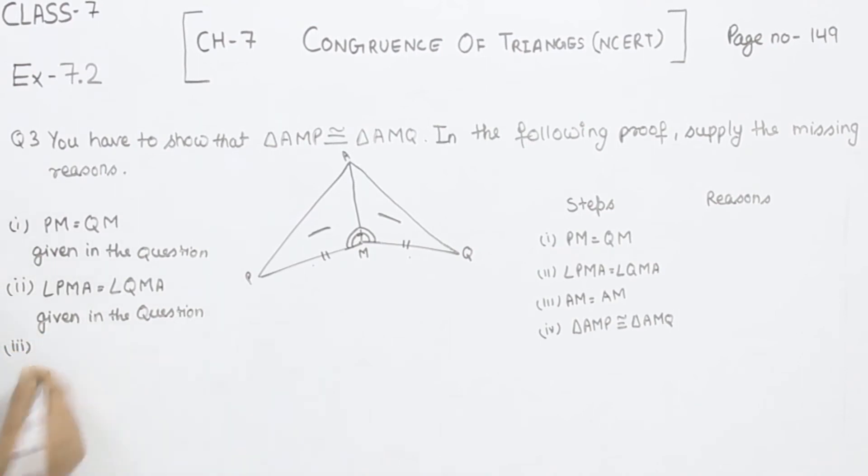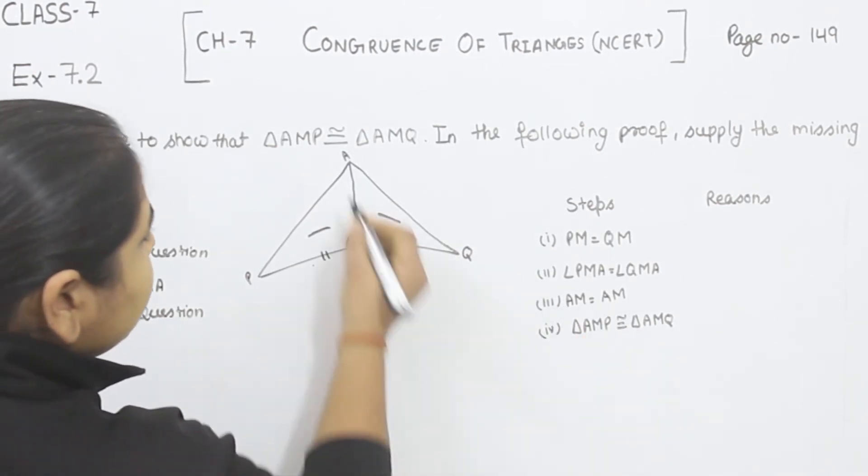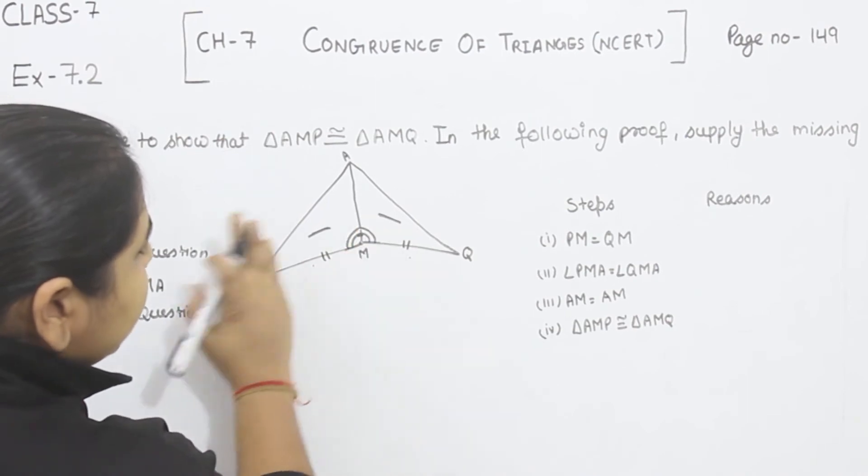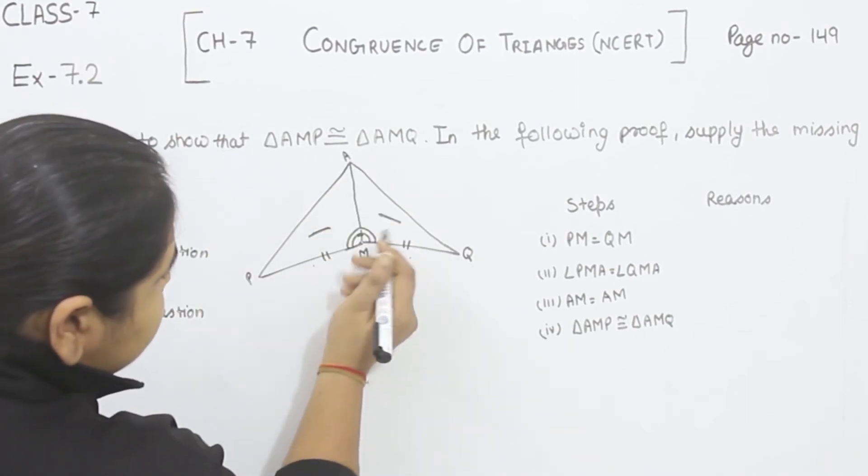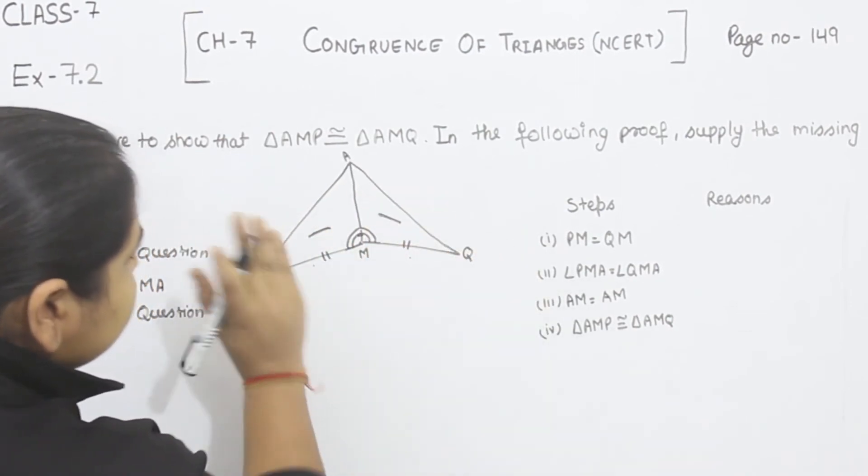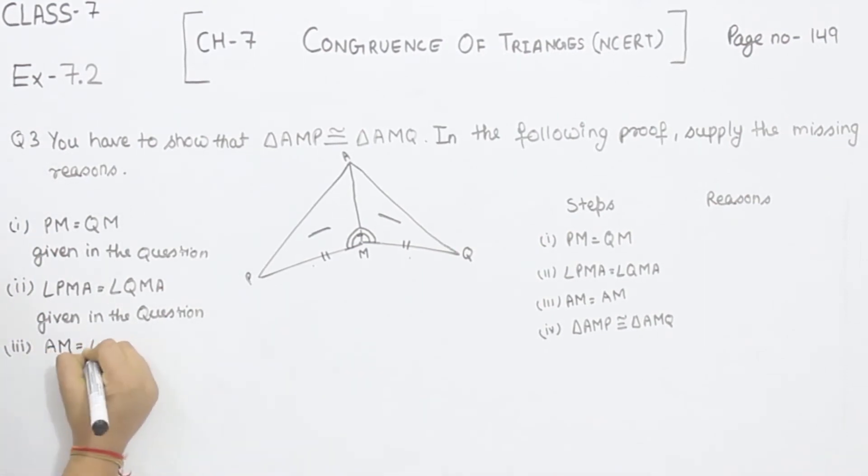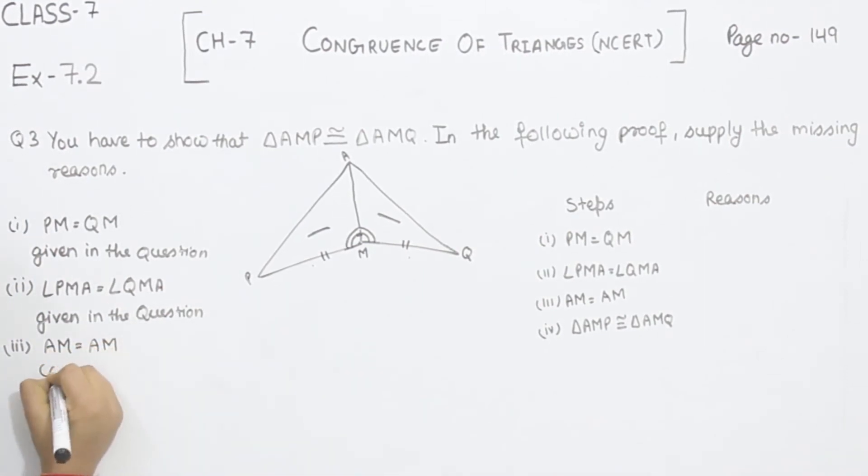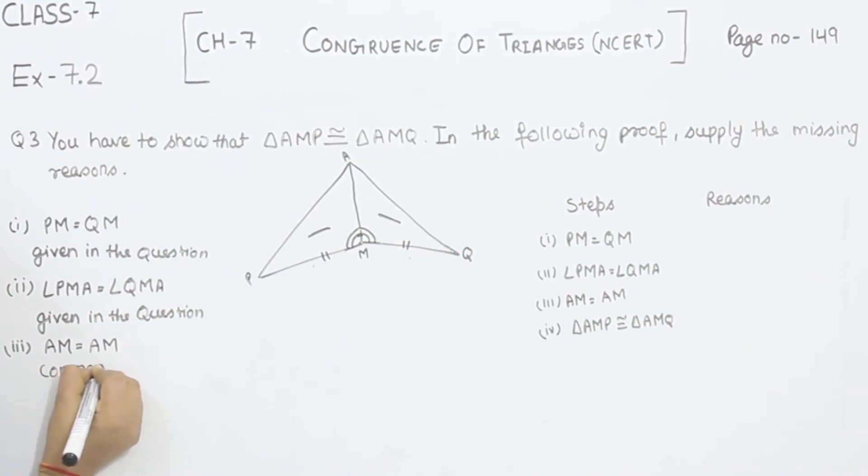Now comes to part 3. AM is equal to AM. This AM is common in this triangle and this triangle also. So we are going to write here AM is equal to AM. Why? Because this is common.